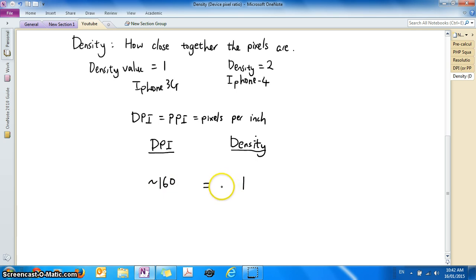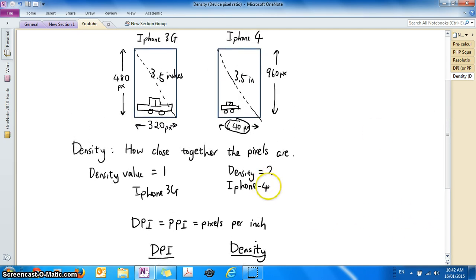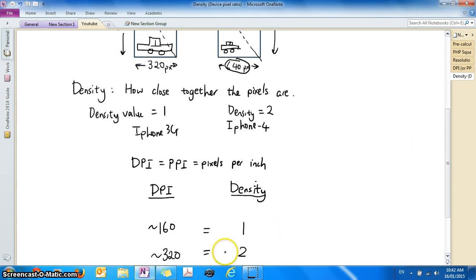Now iPhone 4 has a density value of 326. So therefore around the density value of 320, sorry, around the DPI of 320 we give it a density of 2. So because iPhone 4 has a density of 2, it has around 320 DPI.